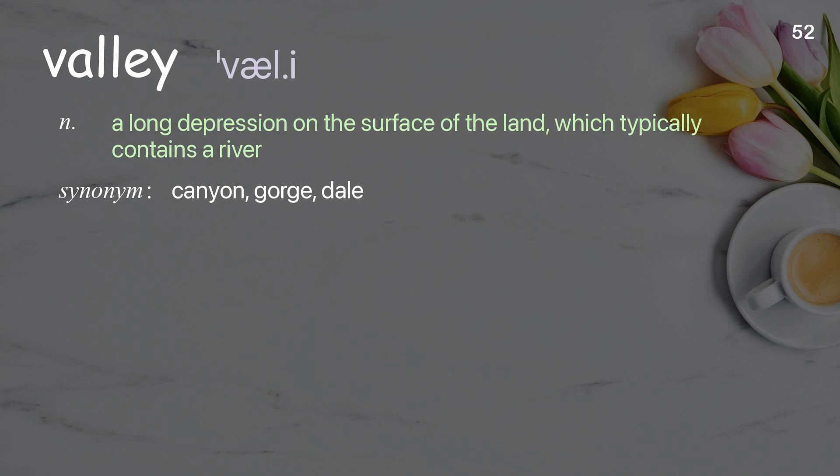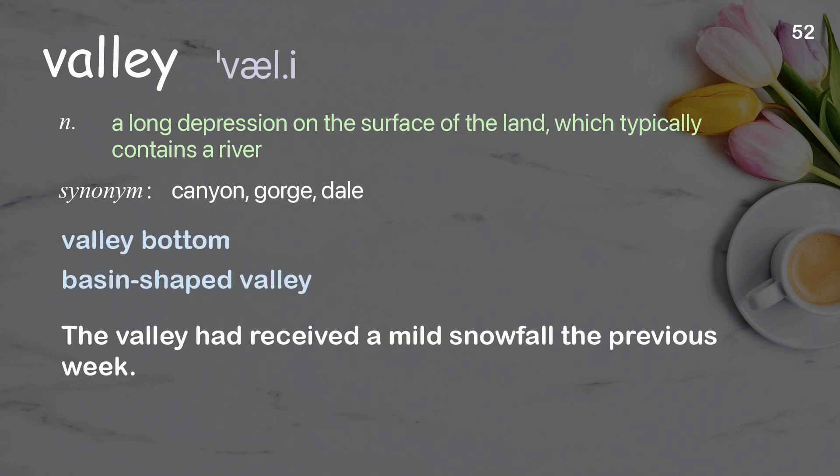Valley: a long depression on the surface of the land, which typically contains a river. Examples: valley bottom, basin-shaped valley. The valley had received a mild snowfall the previous week.